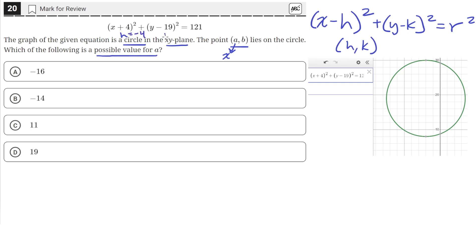And k is equal to 19. That means the center of the circle is at (-4, 19), which is right about here.